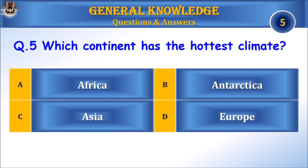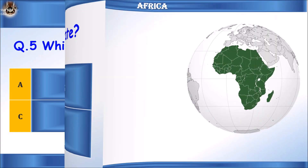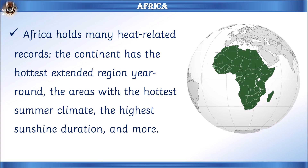Question 5: Which continent has the hottest climate? A) Africa, B) Antarctica, C) Asia, or D) Europe. Answer: A) Africa. Let's learn some facts — Africa holds many heat-related records. The continent has the hottest extended region year-round, the areas with the hottest summer climate, the highest sunshine duration, and much more.